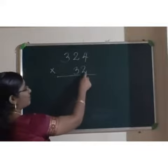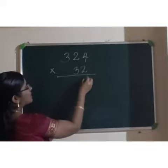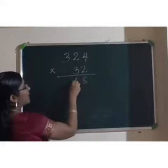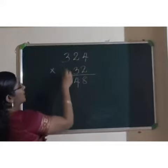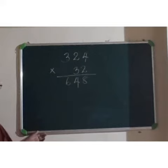We have to start from one place. 2-4s are 8 and 2-2s are 4 and 2-3s are 6. So, first step is over.